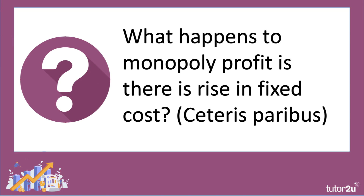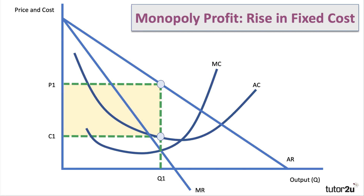Now, what happens to monopoly profit if there is a rise in fixed costs, ceteris paribus? Let's go back to our original diagram where the yellow area shows the level of supernormal monopoly profits. If fixed costs go up — things like capital equipment depreciation, wages, or interest rates on loans — then average cost will go up, but not marginal cost. Don't forget: marginal cost only relates to variable costs, so a change in fixed cost only causes the average cost curve to shift up, in this case to AC2.